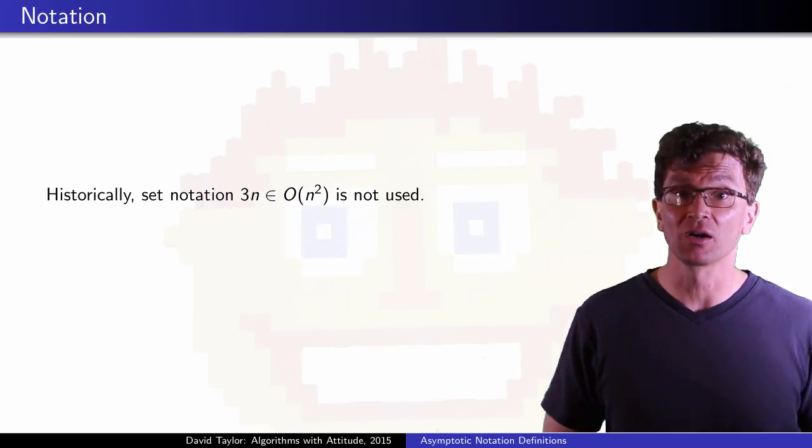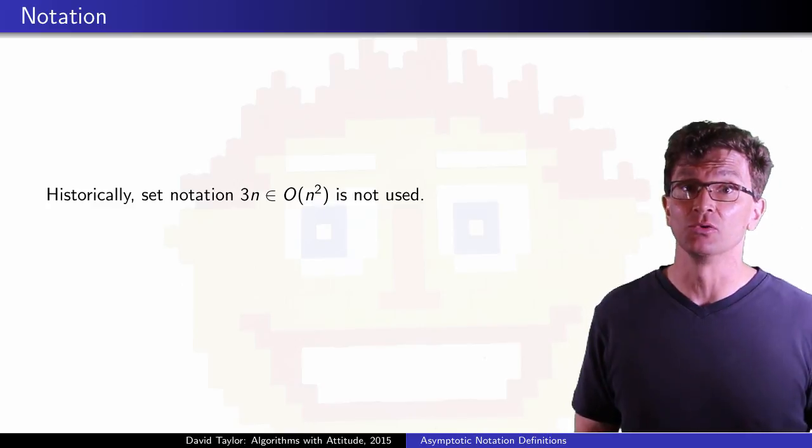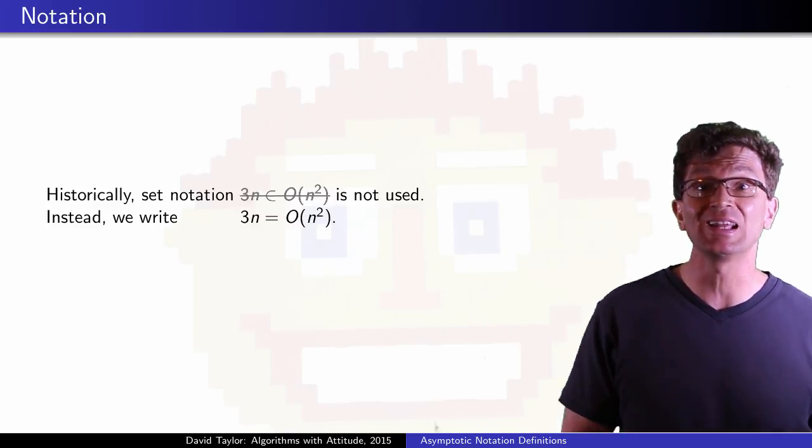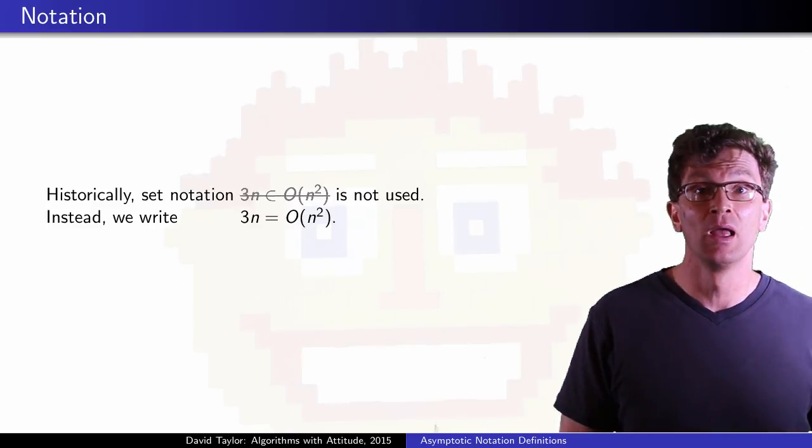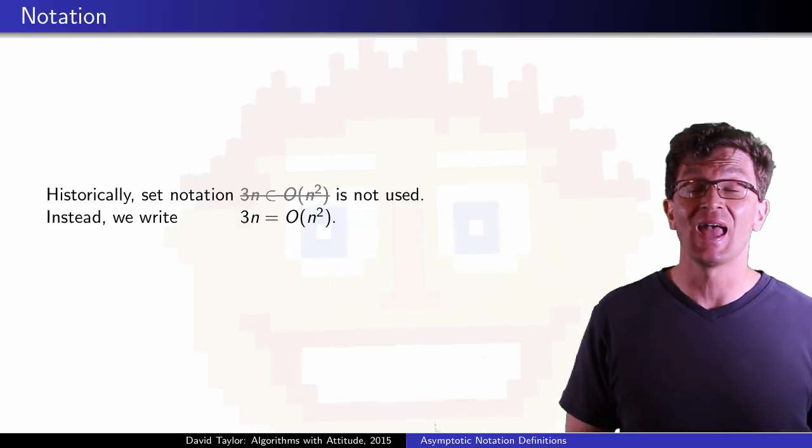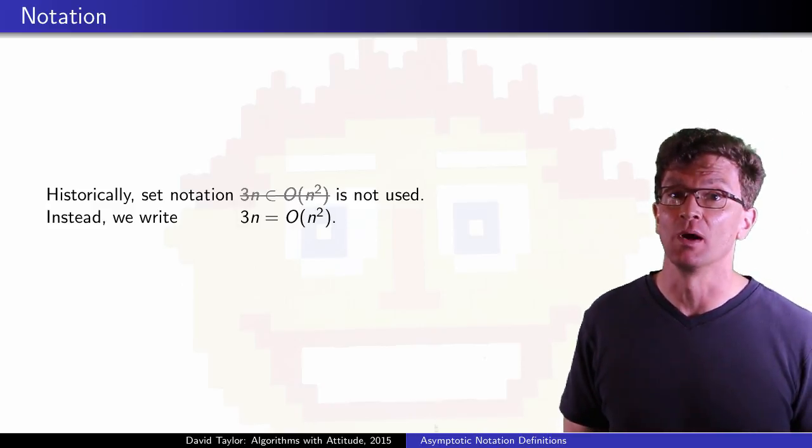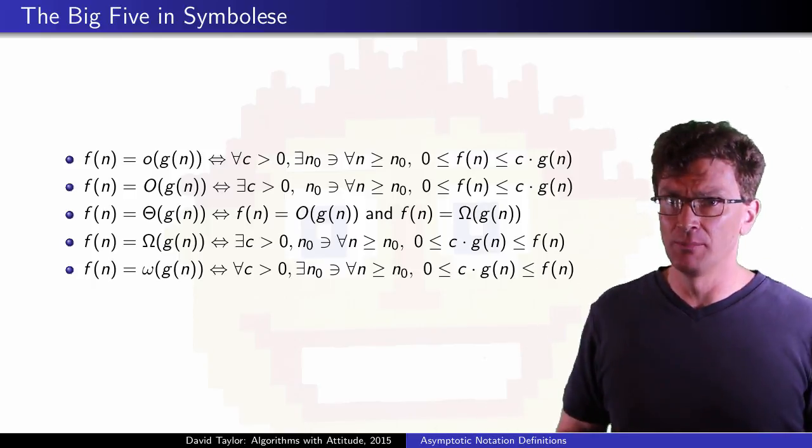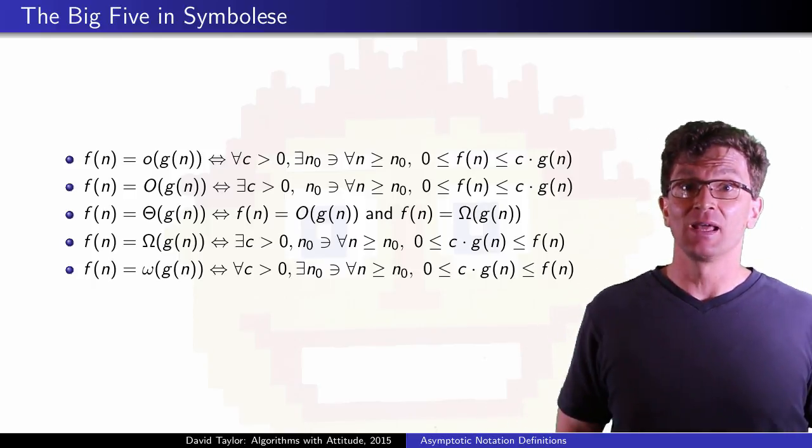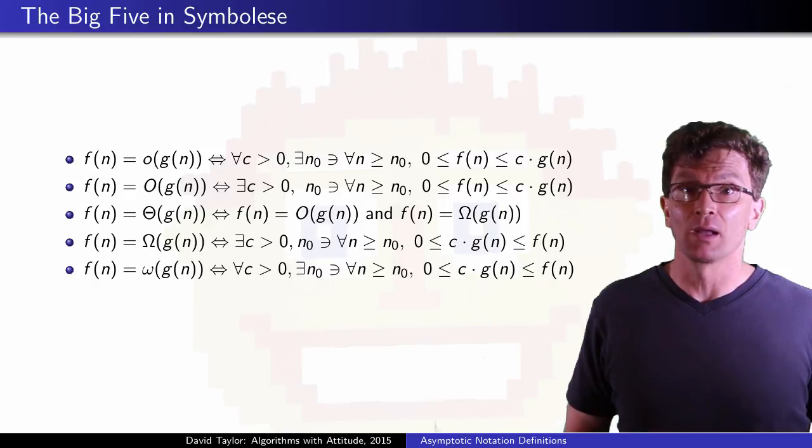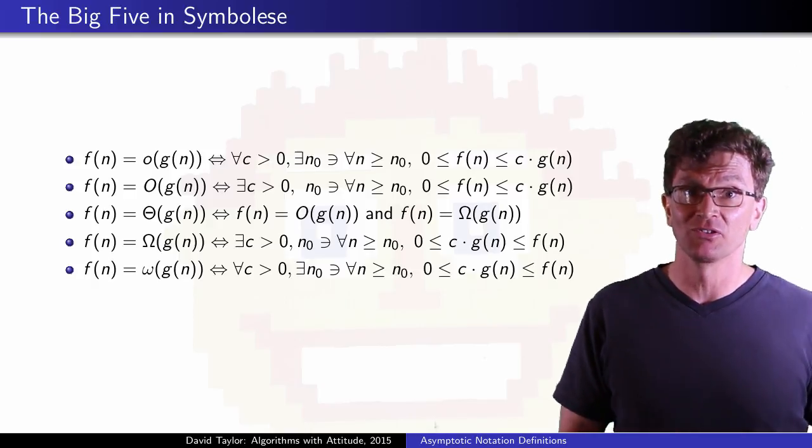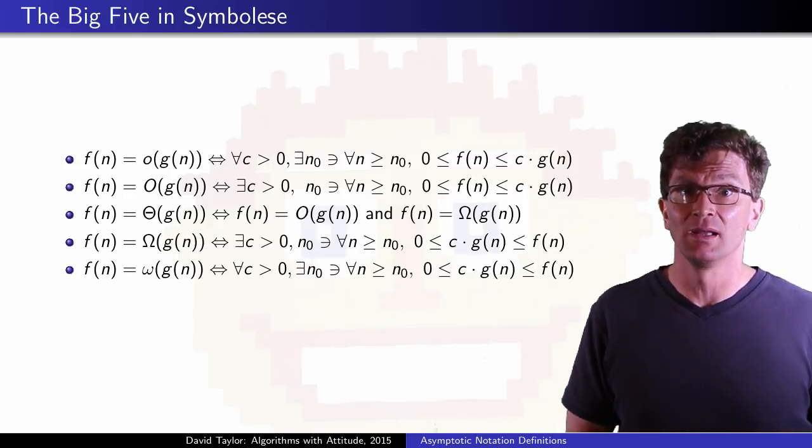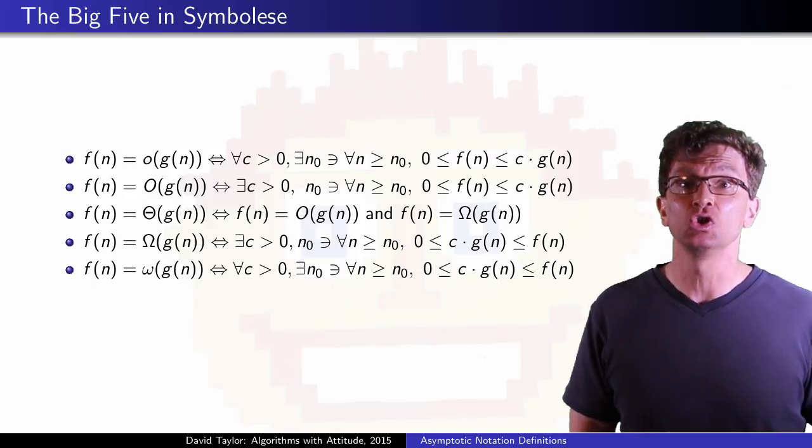One more thing. Historically, set notation isn't actually used. Instead, we write 3n = O(n²), and we read it as 3n is big O of n². So we can use that in our symbolese rules. Notice the middle one, theta. I have defined theta in terms of big O and big omega. I could have defined it in symbols like the others, but I think that this way is probably an easier way to use it.